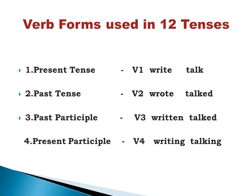We will take up the example of an irregular verb. For example, 'write'. The present tense is write, past tense is wrote, the V3 is written, and the present participle form of it is writing.